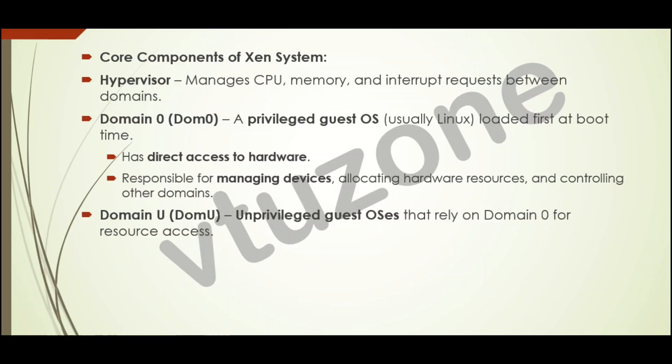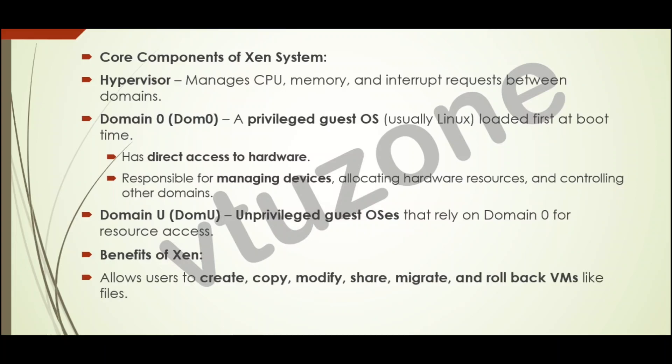Then, Domain U — this refers to unprivileged guest operating systems. They run inside Xen but can't access hardware directly; they depend on Domain 0 for that. The benefits of Xen: it lets you create, copy, and move virtual machines just like files. You can even roll back to a previous VM state, like undoing mistakes. It offers flexibility and easy management, perfect for cloud environments and testing labs.